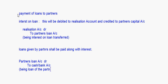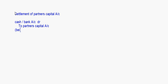Next is settlement of partners' capital account. There can be two things: either the partner has to be paid cash, or the partner has to bring in cash. If the partner has to bring in some cash, the entry is: Cash or Bank Account debit to Partners' Capital Account — being the amount brought in by the partner.